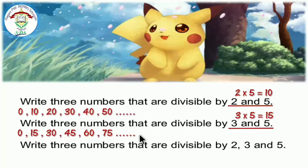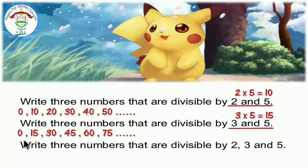Multiples of 15 are: 0, 15, 30, 45, 60, 75, and so on — each time we jump by 15. Please choose any 3 numbers and write them.